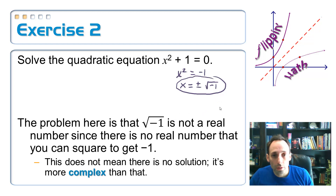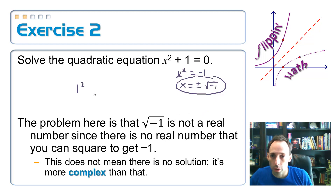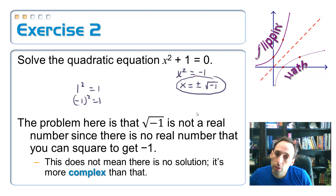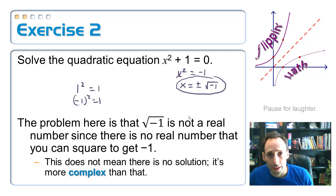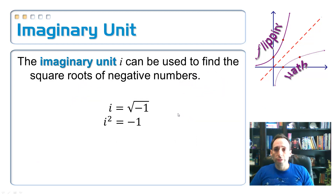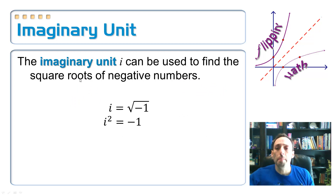The problem is that the square root of negative 1 is not a real number, because you cannot find a number that you can square and get negative 1 back. For example, 1 squared is 1, and negative 1 squared is also 1. There's no real number you can square to get negative 1. But that doesn't mean there's no solution — it's just a little bit more complex than that.